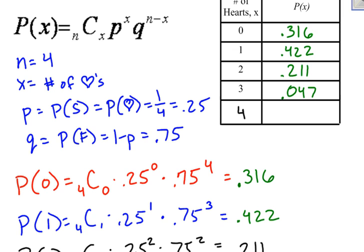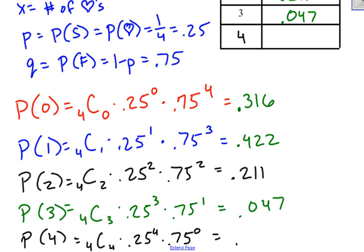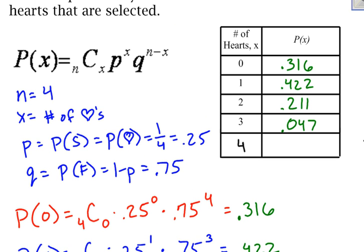Finally, the probability of getting all four hearts: 4 choose 4, times 0.25 raised to the fourth, times 0.75 raised to the zero. The math there gives 0.004. So the probability of getting four hearts is 0.004.